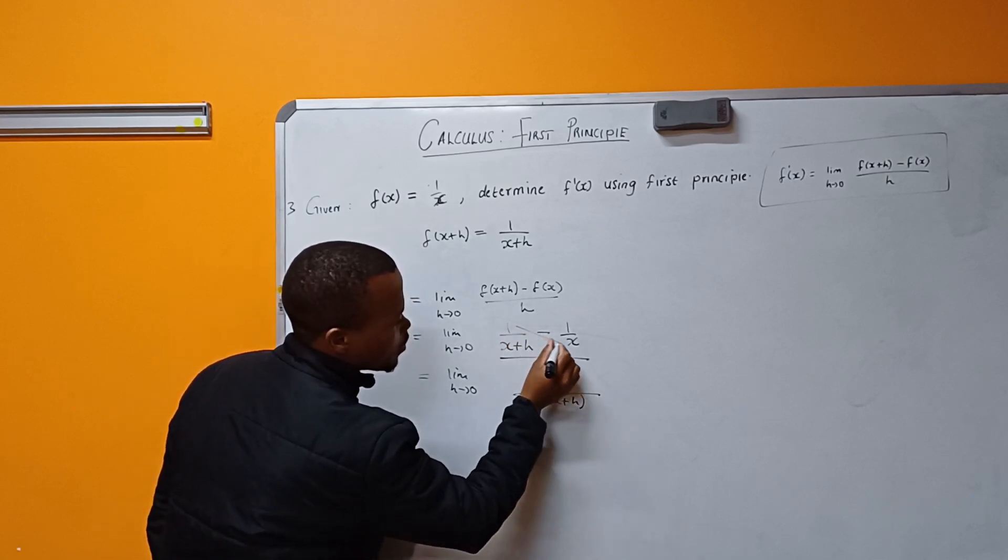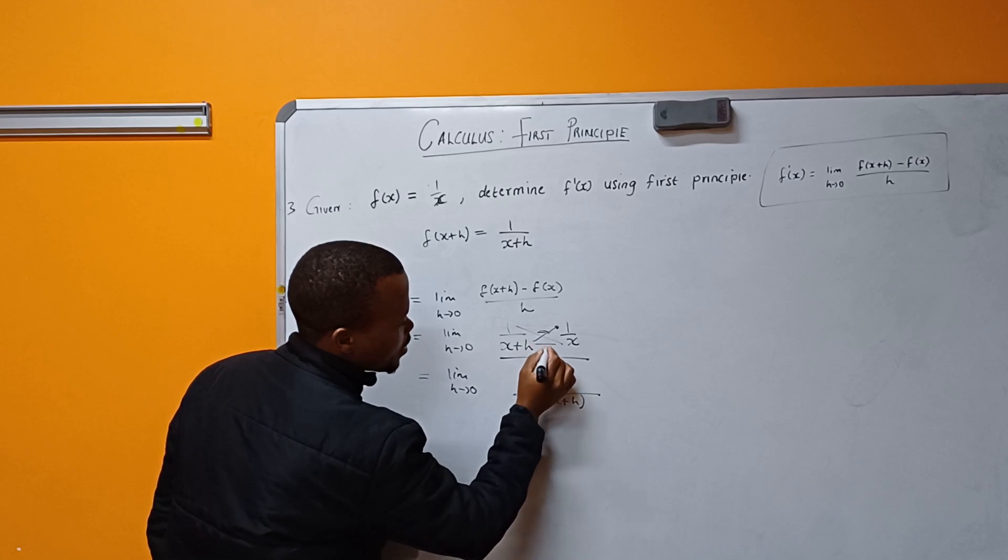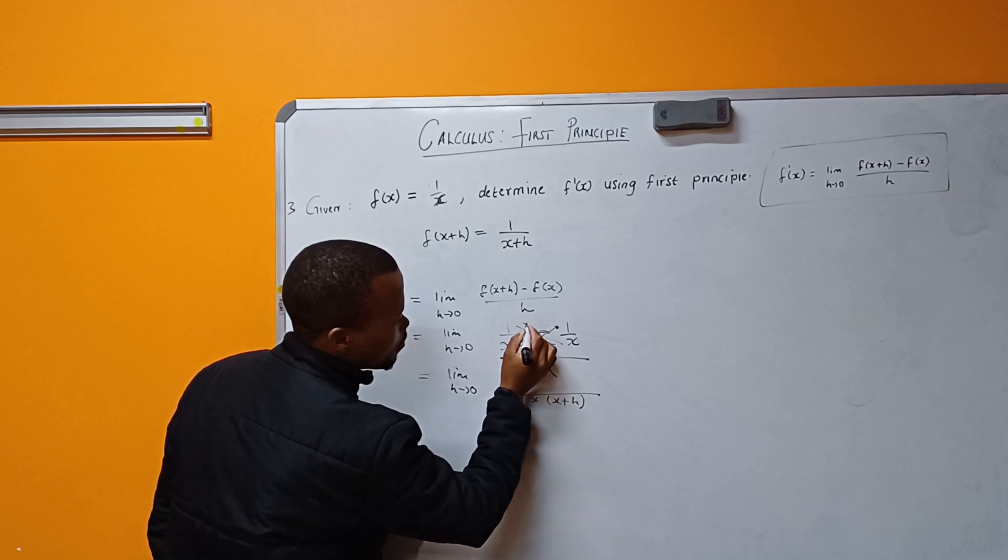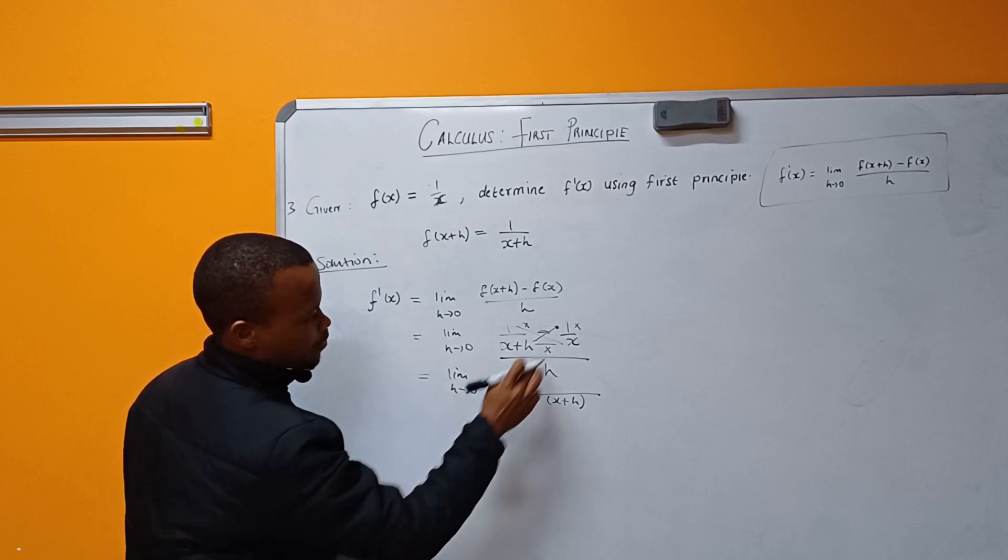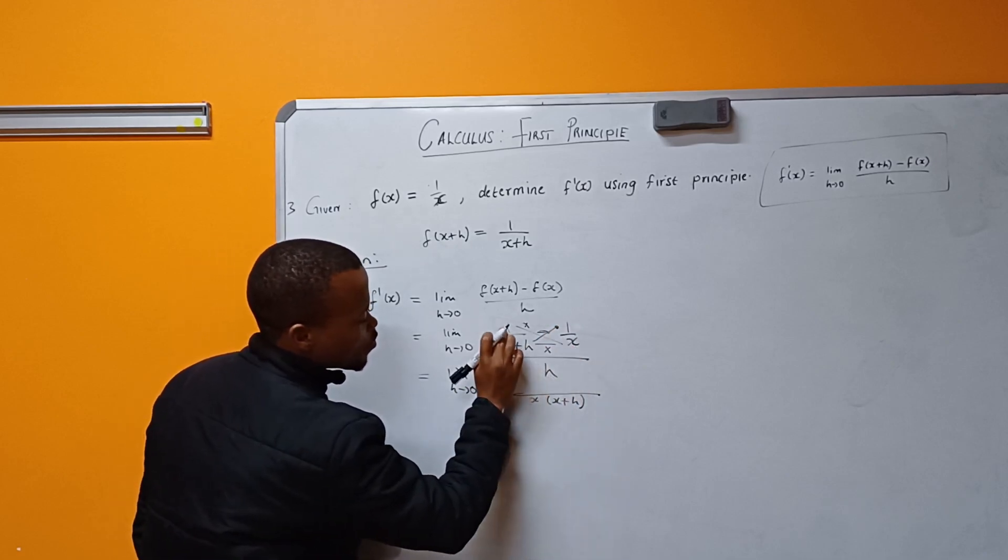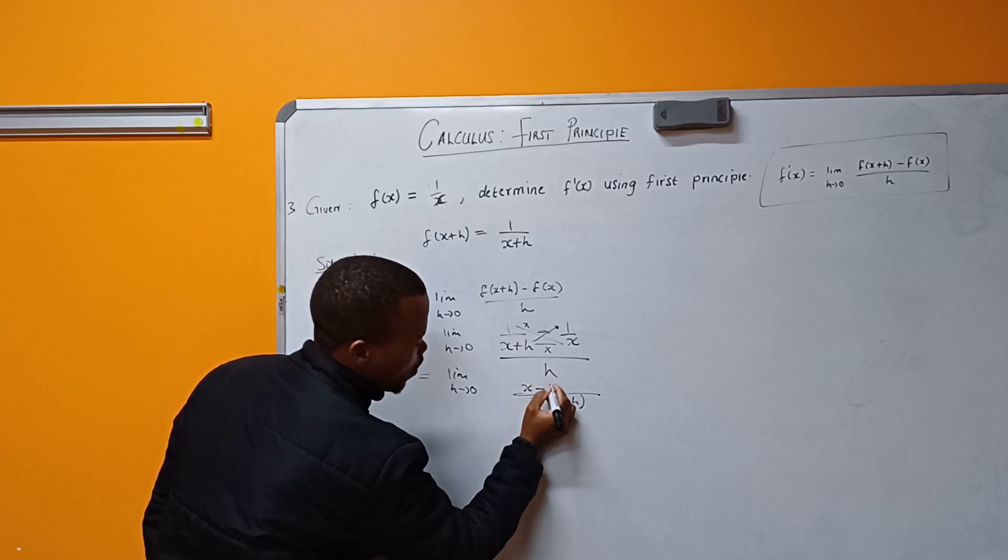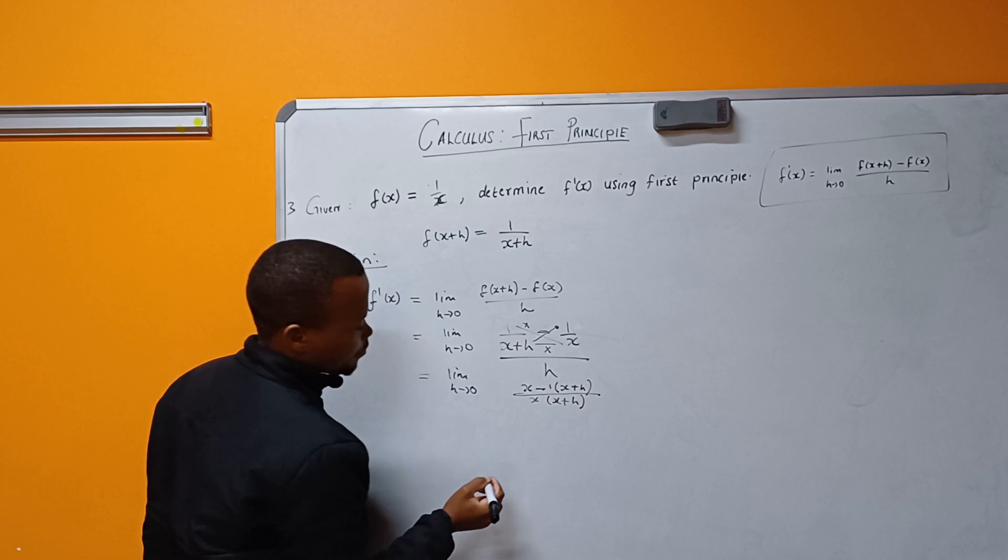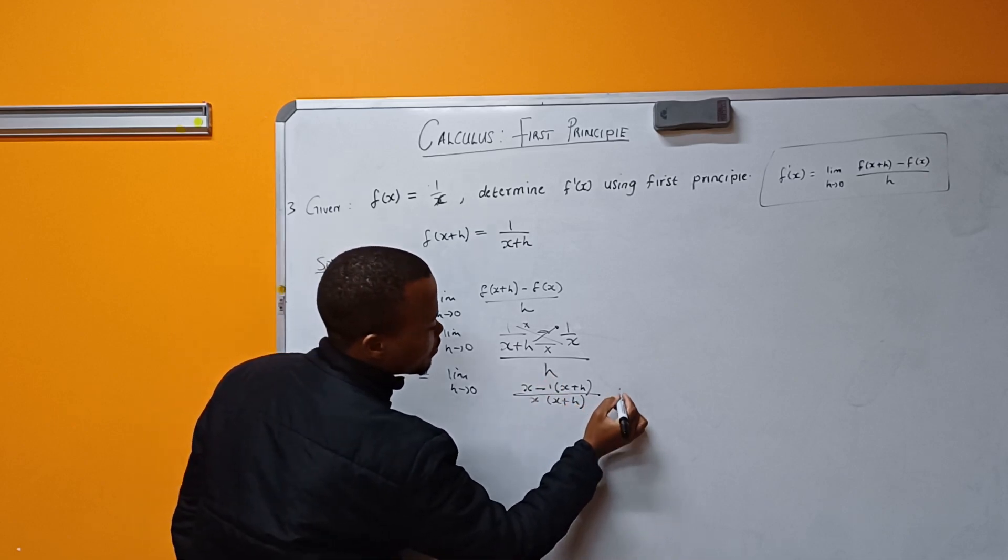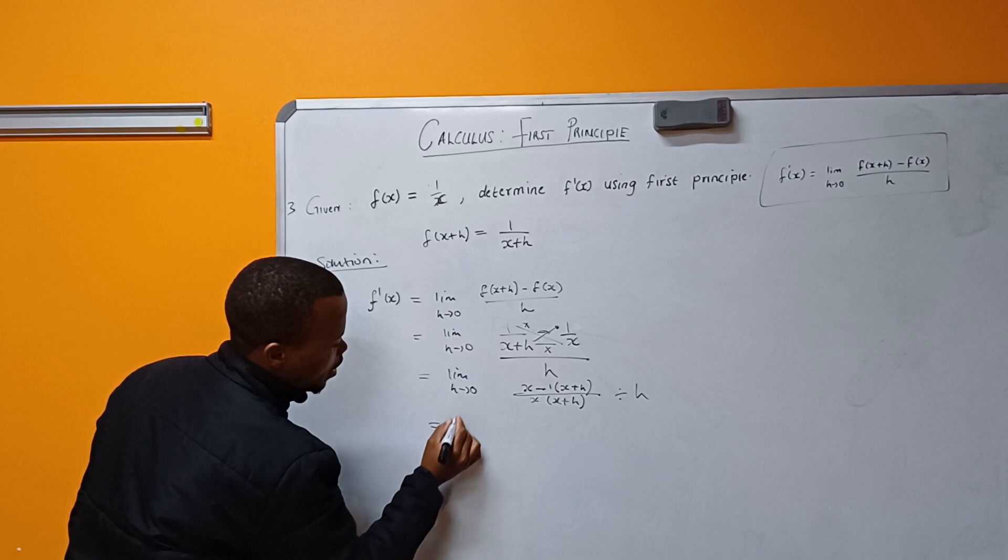Do the cross multiplication here. So I multiply this by this and this by this. I think it is clear. So x times 1 becomes x, minus here 1 times (x+h), divided by h.